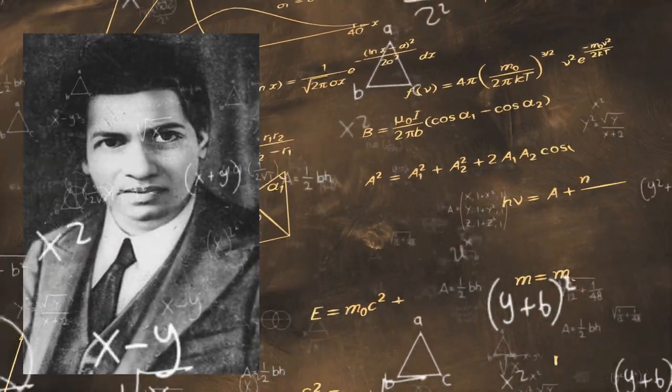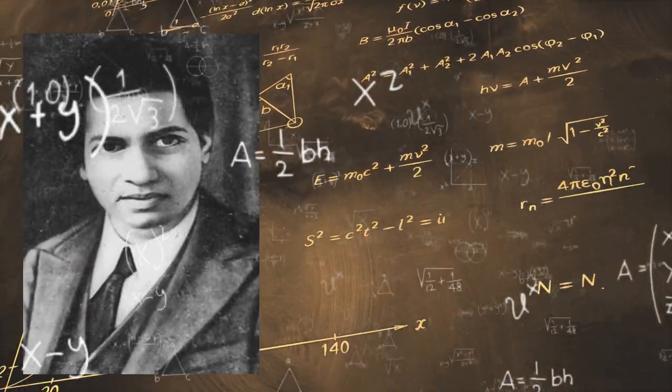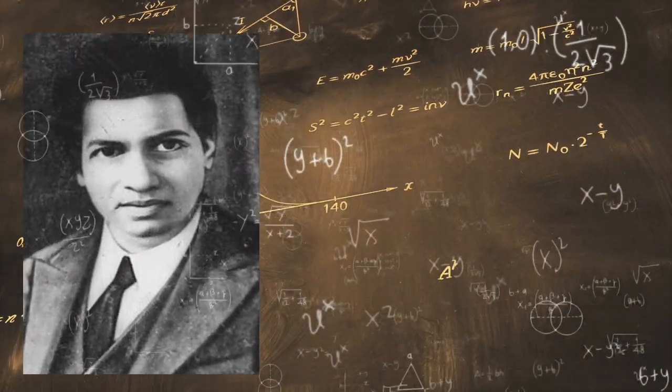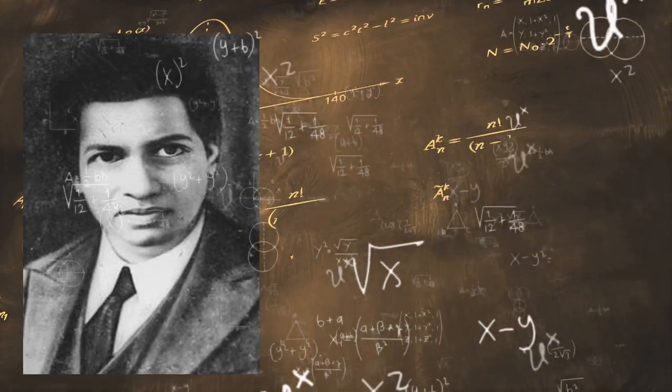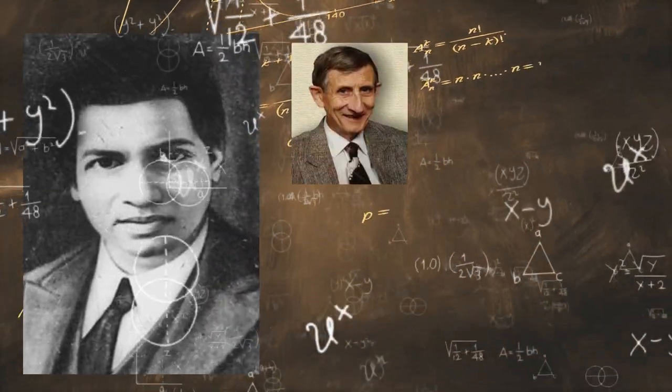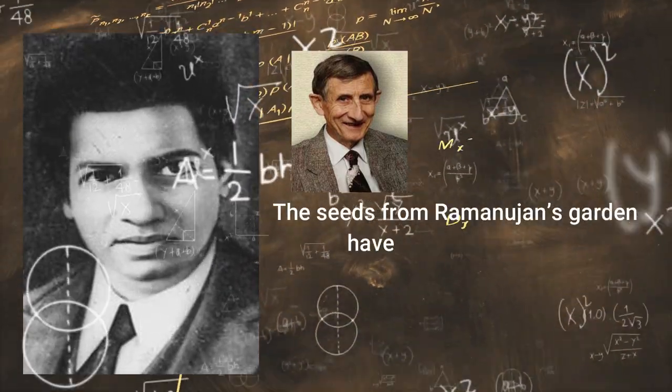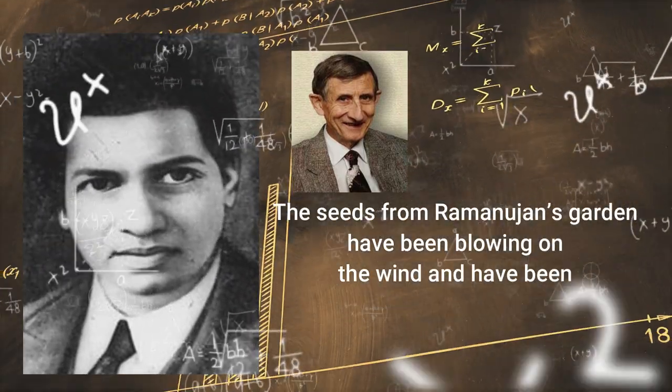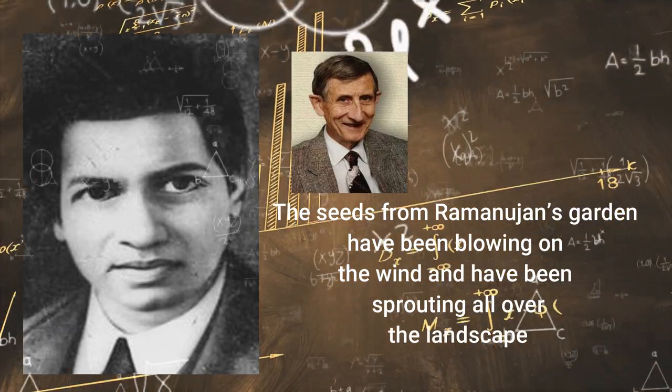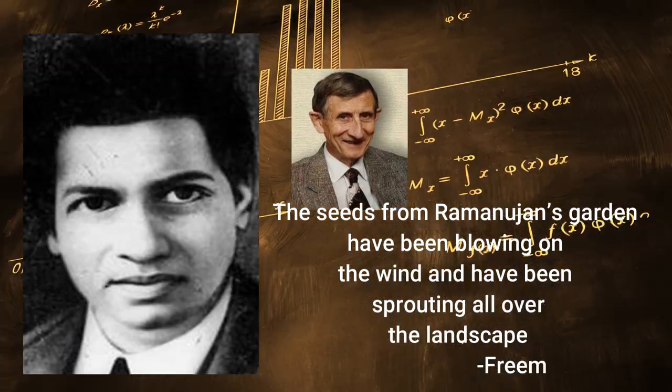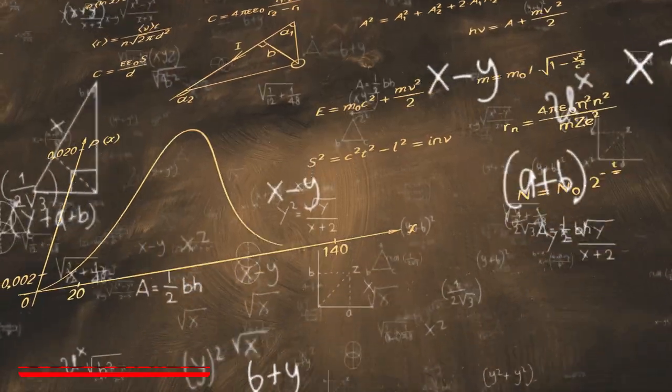American mathematician and professor Freeman Dyson once said, 'The seeds from Ramanujan's gardens have been blowing on the wind and have been sprouting all over the landscape.'